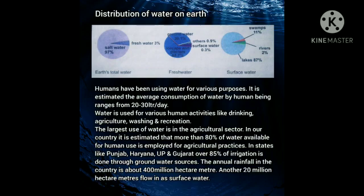In our country, it is estimated that more than 80% of water available for human use is employed for agricultural practices. In states like Punjab, Haryana, Uttar Pradesh and Gujarat, over 85% of irrigation is done through groundwater sources. We have been misusing and polluting water to a great extent. Some of the problems related to water in our country are scarcity, overuse and unequal distribution. The annual rainfall in the country is about 400 million hectare meters, and another 20 million hectare meters flows in as surface water. Importance should be given to educating people about the need for harvesting rainwater resources and constructing watersheds.